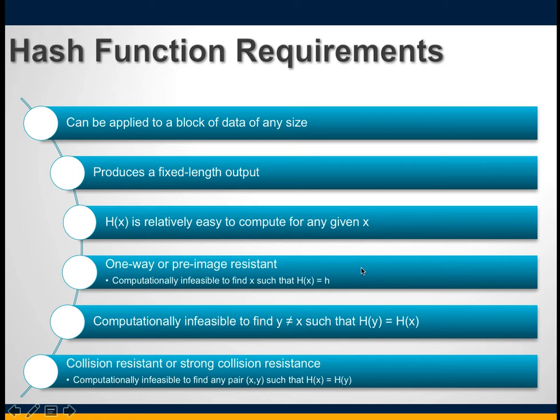Property six: it is computationally infeasible to find any pair of x and y — two messages or blocks — such that their hashes are the same. This is called strongly collision resistant. The first three properties are requirements for practical application of a hash function to message authentication. The fourth property is the one-way property: it is easy to generate a code given a message, but virtually impossible to generate a message given a code.